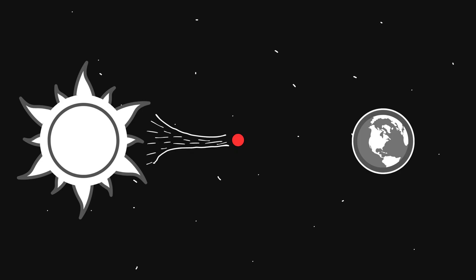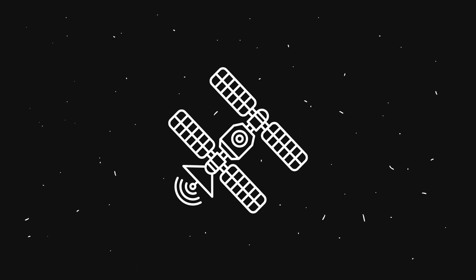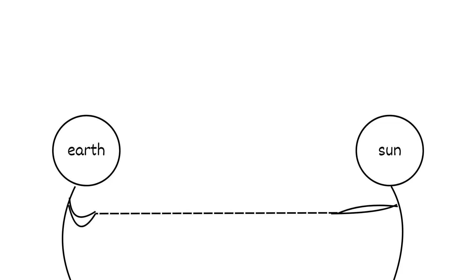The sun pulls one way, the Earth pulls the other. A spacecraft can park right in the middle and just stay there. Here's the simple version. The Earth tugs. The sun tugs back. A small spacecraft slides into a sweet spot where those tugs even out.